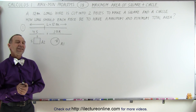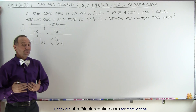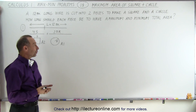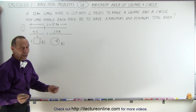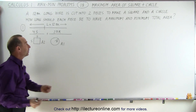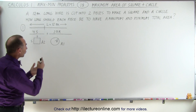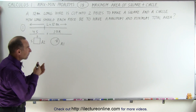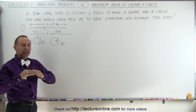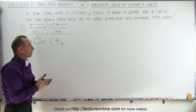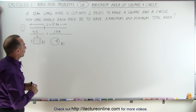Welcome to Electron Align. Our next problem is also a very interesting and rather challenging one. Let's say that we have a piece of wire. It is 12 meters long and we're going to cut that wire into two pieces. Each piece is used to make a particular figure — one of them is a square, the other one is a circle.